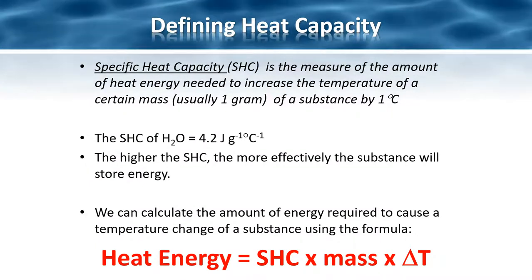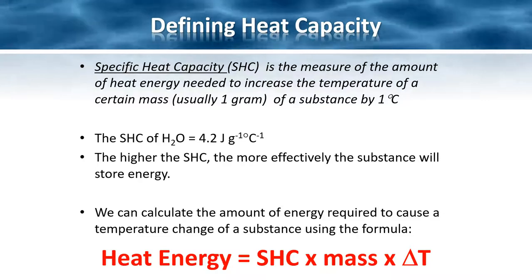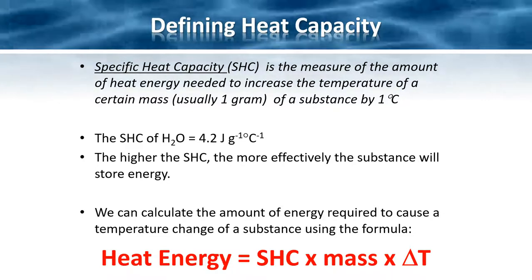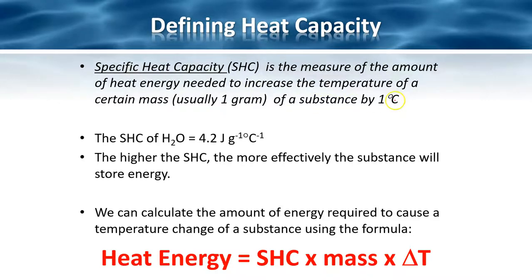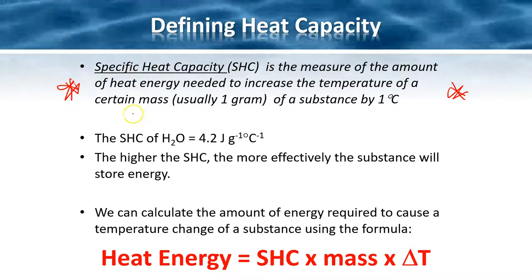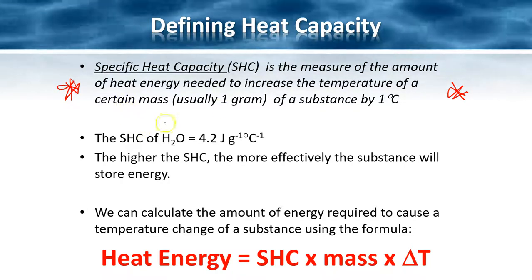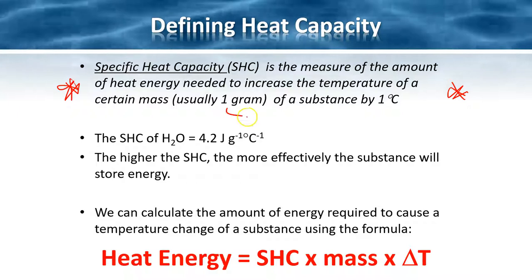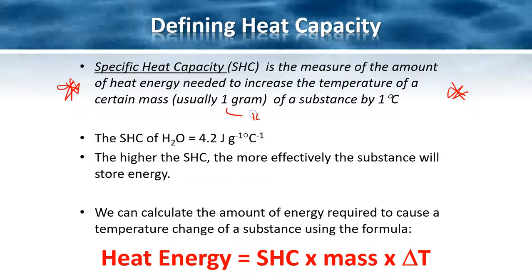The specific heat capacity is defined as the amount of heat energy needed to increase the temperature of a certain mass - one gram in chemistry - of a substance by one degree C. This is the definition you need to know. In physics, they sometimes use one kilogram, which changes the energy calculations.